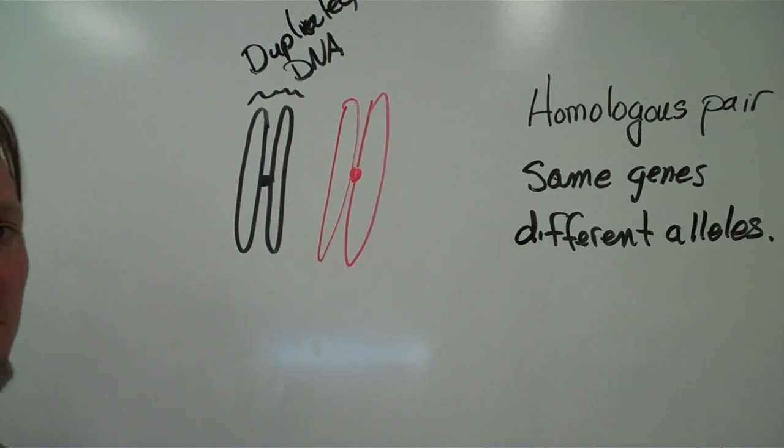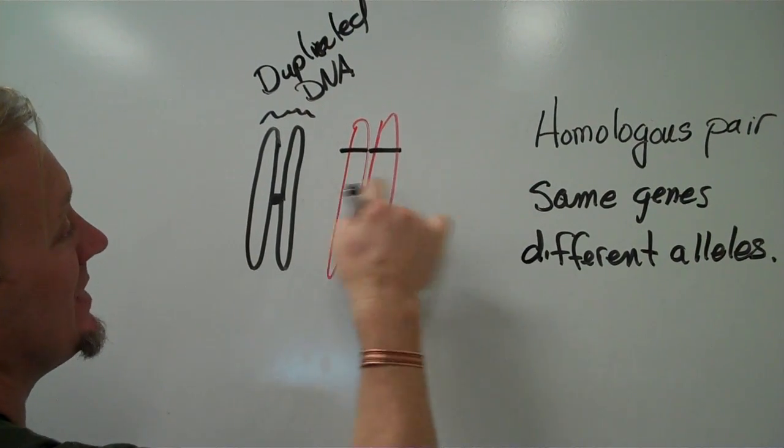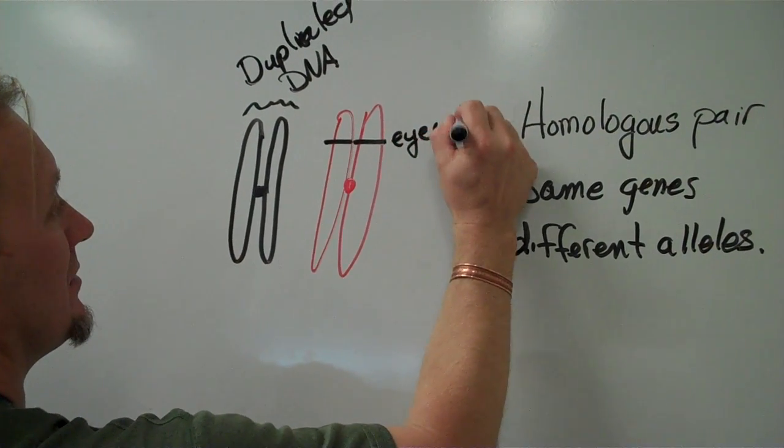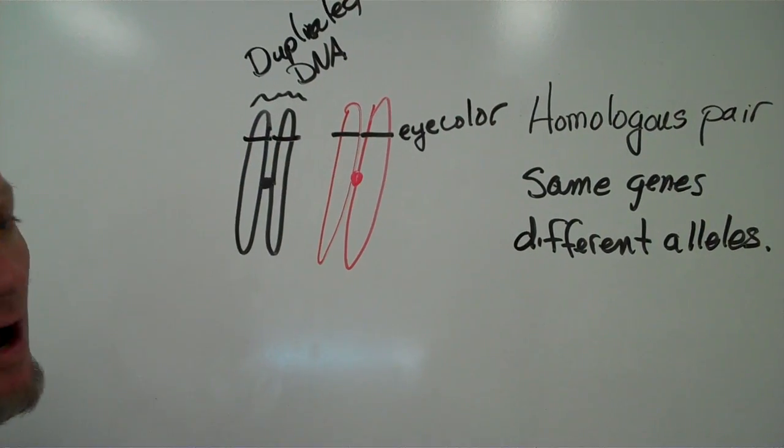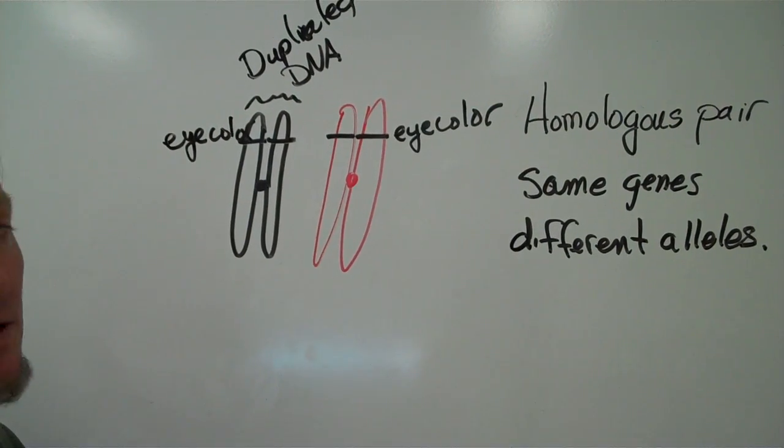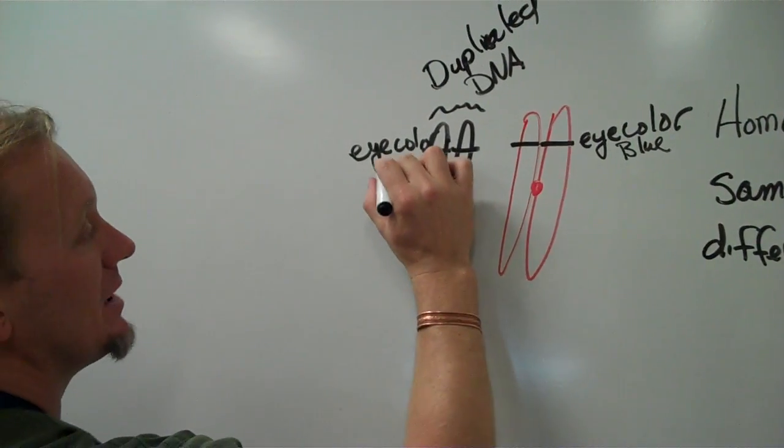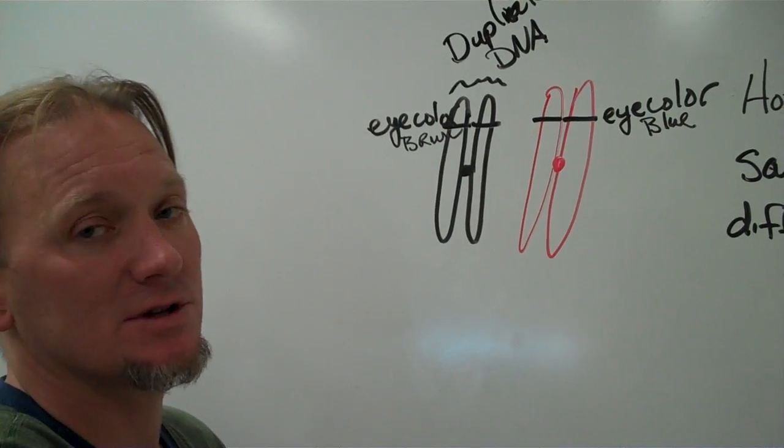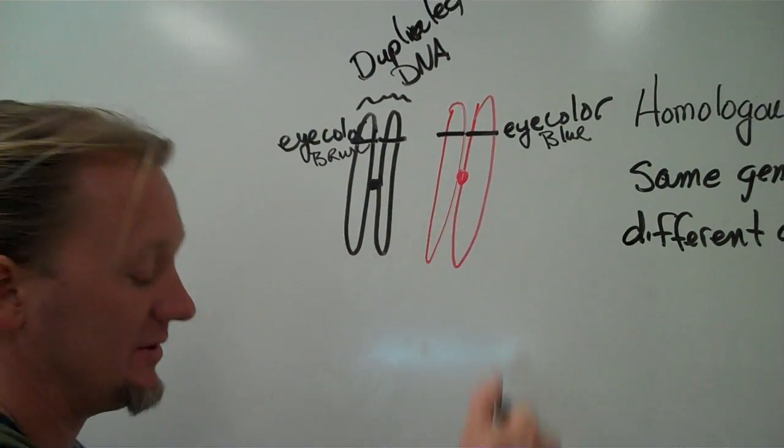So that means that if you have eye color, it could be, it would obviously be identical on these two. And it might be eye color. It'll be in the same place on the homologous pair here, eye color. But in this case, it might be blue. In this case, it might be brown. So, in other words, same genes on the homologous pair, different alleles.